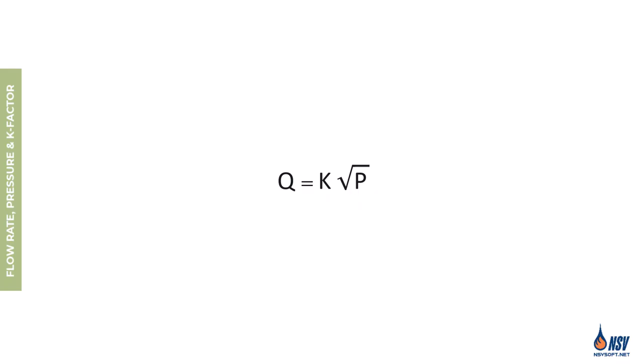The equation Q = K√P is one of the most widely used formulas in hydraulic calculations for fire sprinkler systems. We apply it when we know the K factor and pressure to determine the flow rate, or when we know the K factor and flow rate to calculate the required pressure. It's also useful for simplifying system calculations by determining an equivalent K factor for a section of the sprinkler system. In the following sections we'll explore how to apply the equation to calculate flow rate, pressure, and the equivalent K factor.